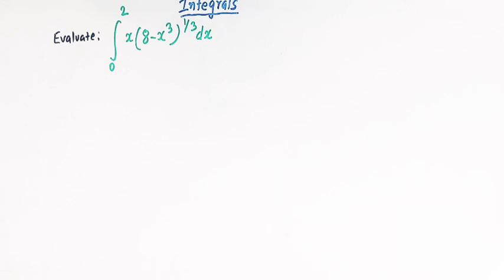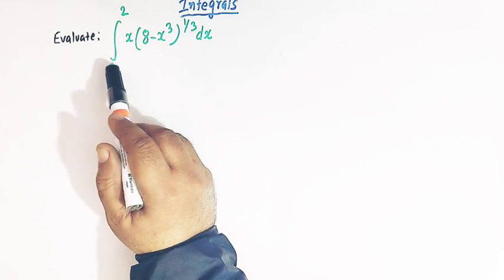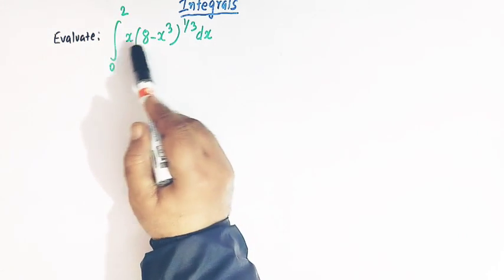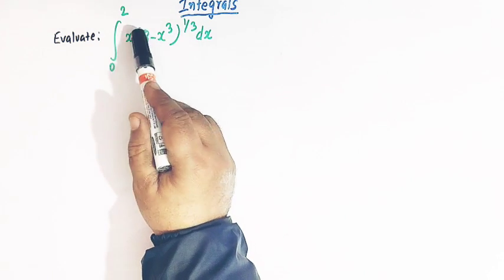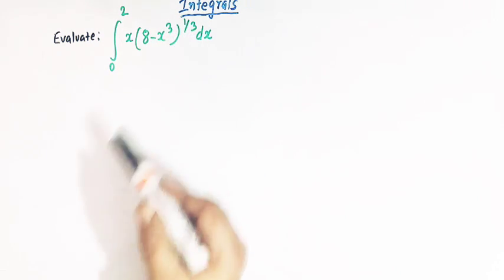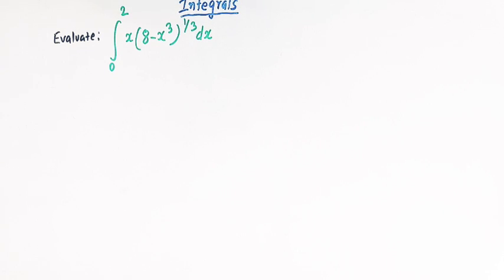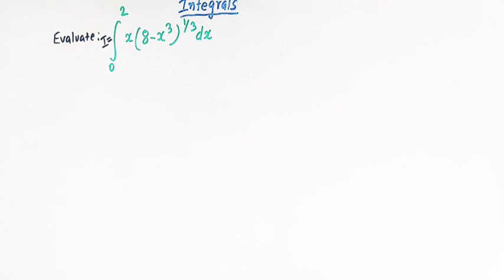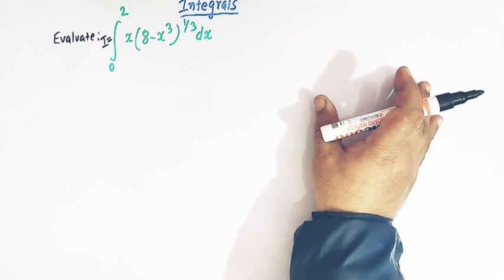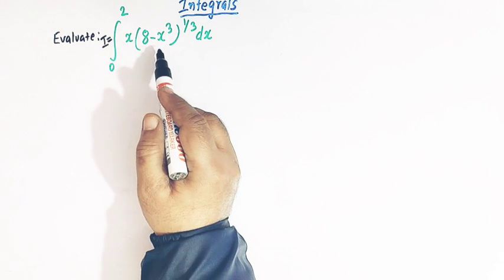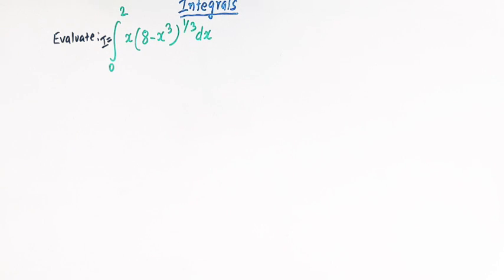In this lecture we'll solve this very important integral which is from 0 to 2, and the integrand is x times (8 minus x³) raised to 1 over 3. Let us call this integral I. Let us first see the list of results which are going to be used while solving this important integral.